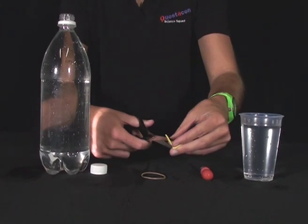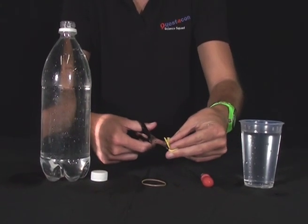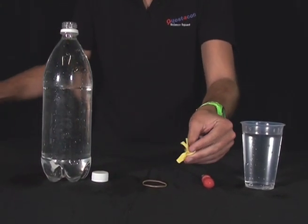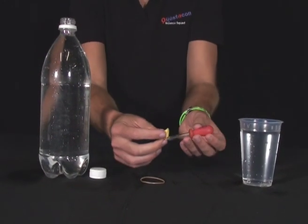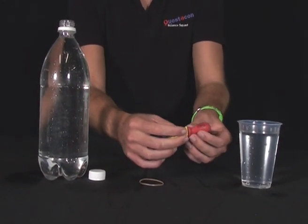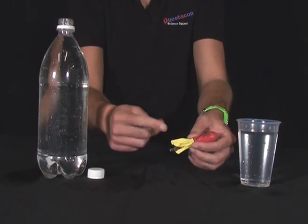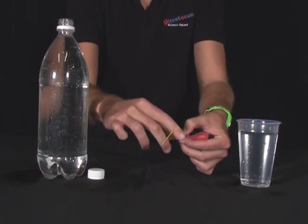These strips are going to be your squid's tentacles, so the next thing we need to do is attach the tentacles to your squiddy. So place the balloon neck over the eyedropper and attach it using an elastic band.